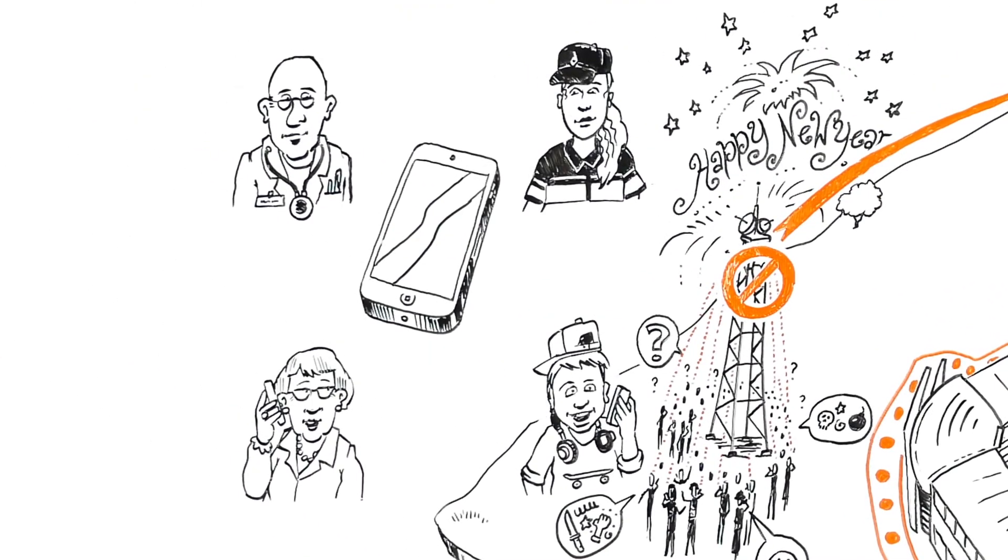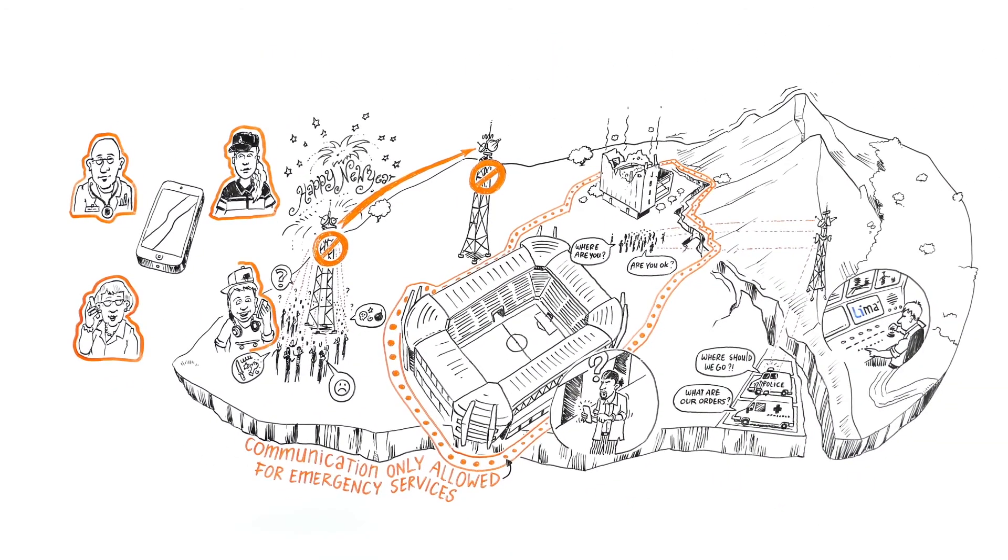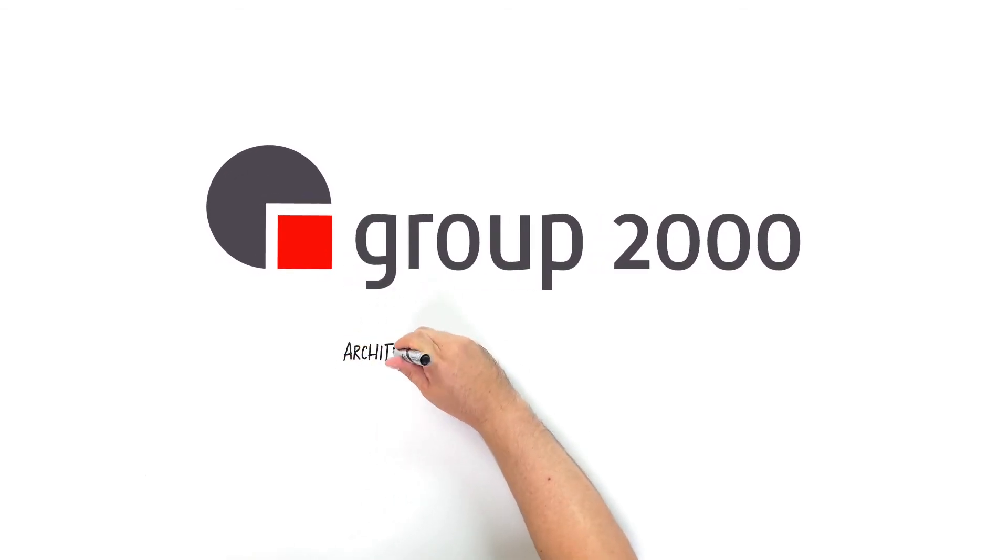Lima Network Protect puts an end to failing communication and helps to safeguard the most important thing in this world. Group 2000. Architects in safety and intelligence.